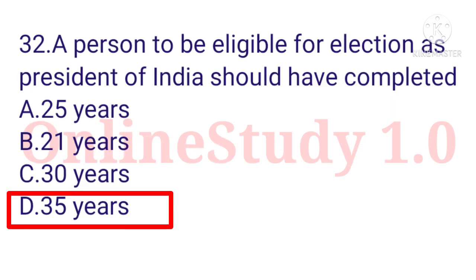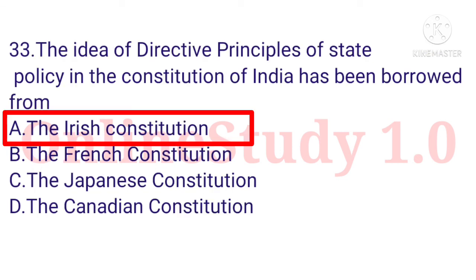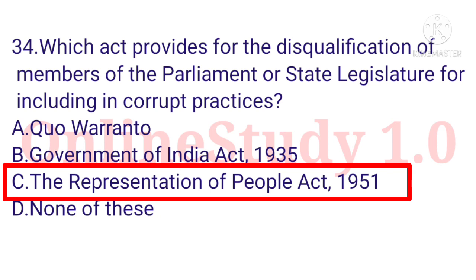Question number 32: A person to be eligible for election as President of India should have completed option D: 35 years of age. The idea of directive principles of state policy in the Constitution of India has been borrowed from option A: the Irish Constitution. Question number 34: Which act provides for the disqualification of members of Parliament or state legislature for indulging in corrupt practice? Option C: The Representation of People Act, 1951.